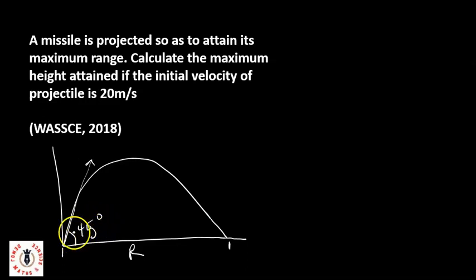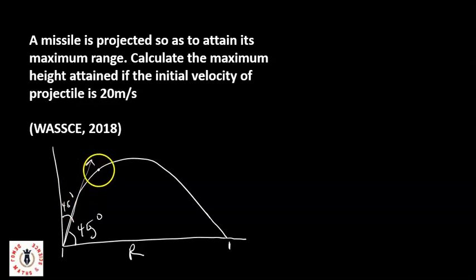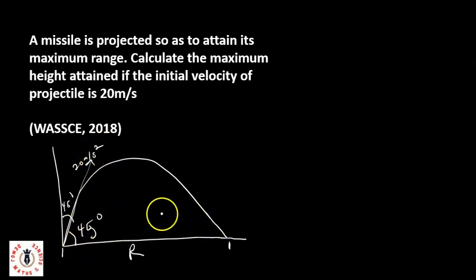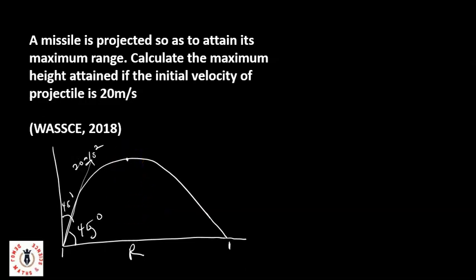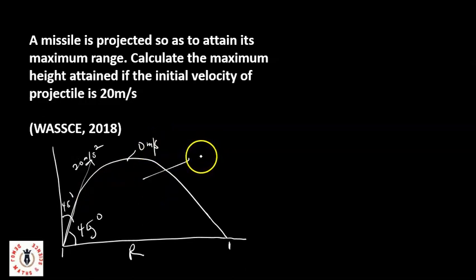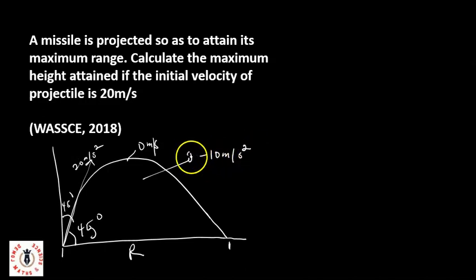For a missile to attain its maximum range, it must be projected at 45 degrees. That means it's projected at 45 degrees to the horizontal, and also 45 degrees to the vertical. It's projected with an initial velocity of 20 meters per second. At maximum height, the velocity would have reduced to zero meters per second, under acceleration due to gravity, which is negative g, negative 10 meters per second squared.